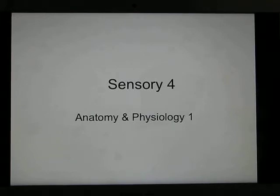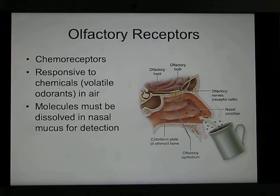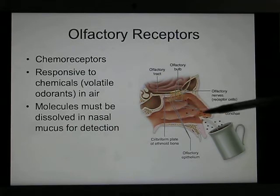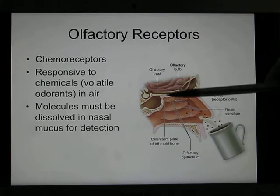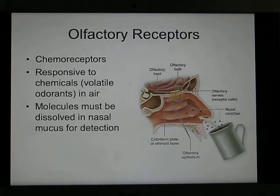We're in sensory four, chemical senses. The chemical senses include the olfactory and gustatory. Let's start with olfactory. Olfactory works by chemical molecules entering your nasal cavity and binding with your olfactory receptor, sending a signal to your brain.